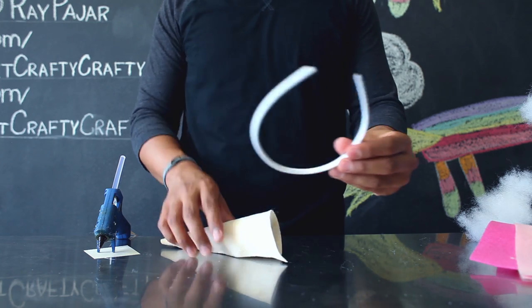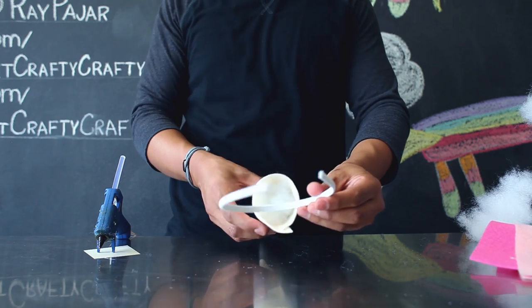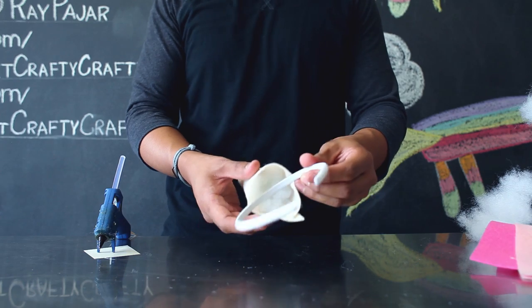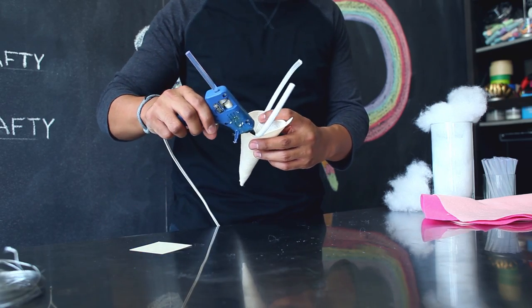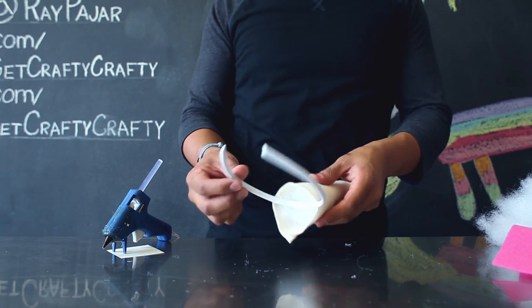Find the center of your headband and you're going to take your horn and place it in the center. Find where the felt meets your headband and apply a small amount of glue to hold it in place. After that hot glue has dried.